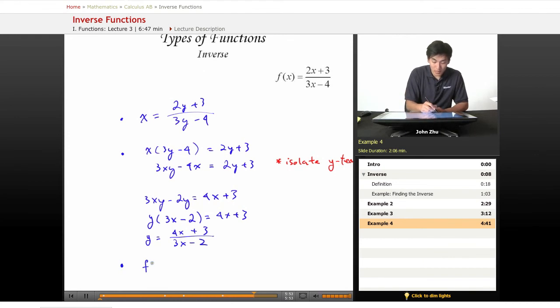We want to rewrite this as f inverse of x equals 4x plus 3 over 3x minus 2. And this is our final solution to find the inverse.